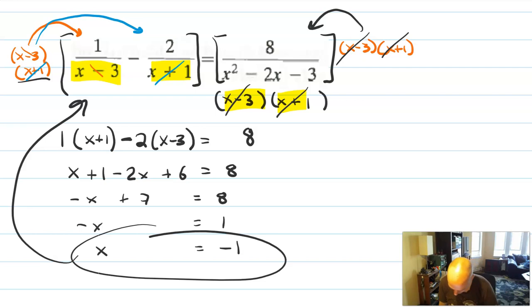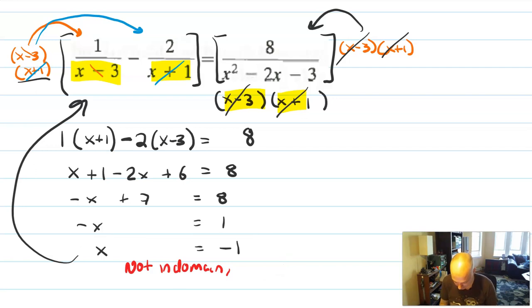Let's check it in there. 1 over negative 1 minus 3 is negative 1 fourth. That's okay. Minus 2 over negative 1 plus 1. Uh-oh. That's minus 2 over 0. So the candidate answer actually causes me to divide by 0, which means, although this is the candidate answer, it's not a solution.